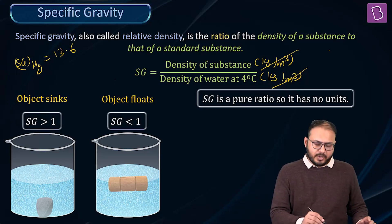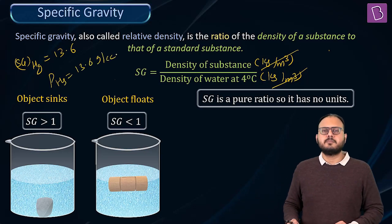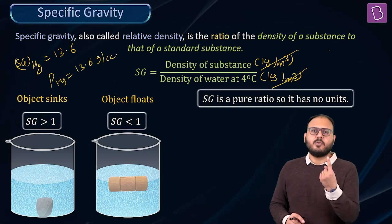No units. But if you ask me, what is the density of mercury? Immediately, I will put gram per cc after that. That's what I meant to say. Why? Because in gram per cc, water is 1.